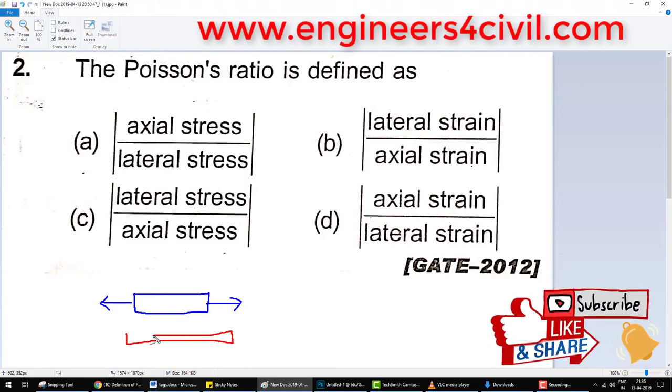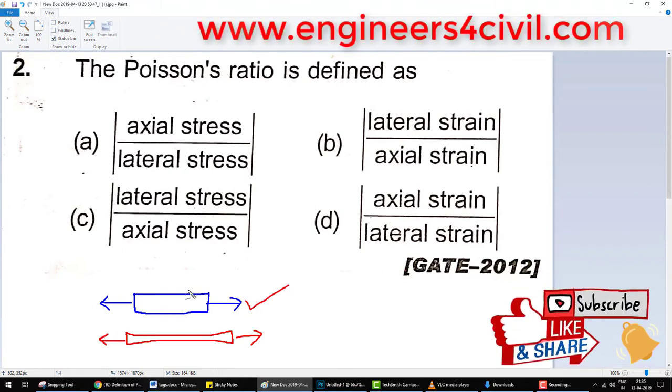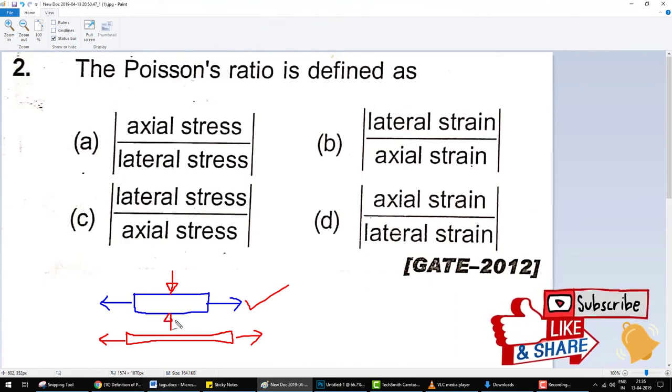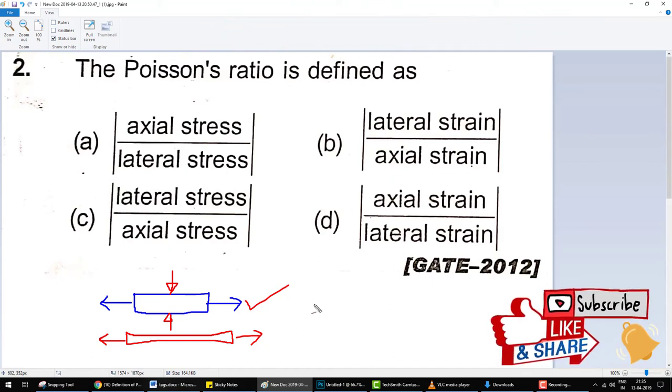But the width of the rubber is decreased. It means this is longitudinal strain and this is lateral strain, and the ratio, the negative ratio of these two strains, is the Poisson ratio. The Poisson ratio is lateral strain upon longitudinal strain.